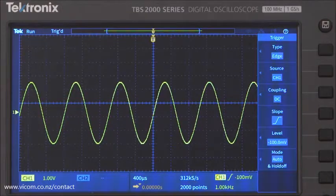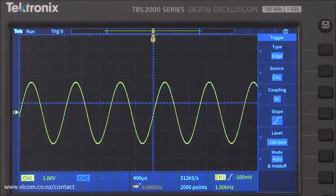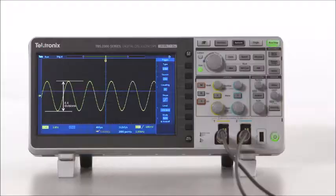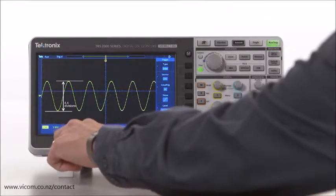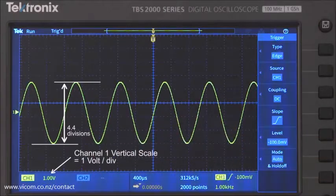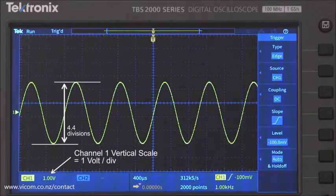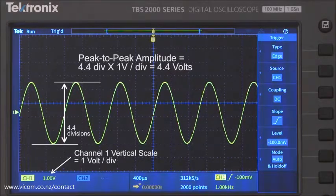Now let's measure the height in divisions. The signal takes up four major divisions and two minor divisions. Each minor division is worth 0.2 divisions, so the signal is 4.4 divisions from top to bottom. You can see the vertical scale for channel 1 right here. At the moment, it's set to 1 volt per division. This makes the math really easy. The peak-to-peak amplitude of the signal is 4.4 divisions times 1 volt per division, which is 4.4 volts.